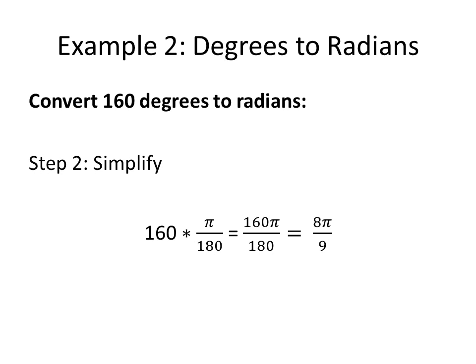Then we simplify this fraction. So we have 160 times pi divided by 180. Multiply the two values on the top to get 160 pi and bring the 180 along. So we get 160 pi divided by 180. Simplify your fraction and you have your final value in radians, which is 8 pi divided by 9.